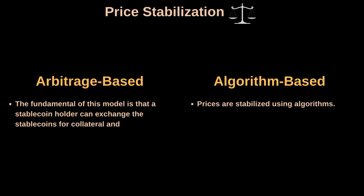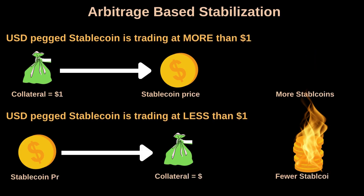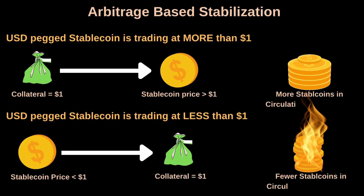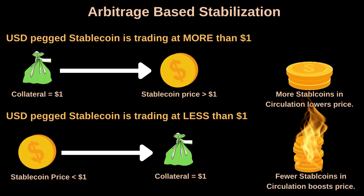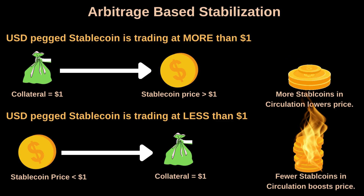Let's start with arbitrage-based stabilization. The fundamental of this model is that a stablecoin holder can exchange the stablecoin for the underlying collateral. When the price of a USD-backed stablecoin is trading above 1 USD, an arbitrator can mint new token units by providing collateral worth 1 USD and then sell the stablecoin units at the prevailing market price, making a profit from the price difference.